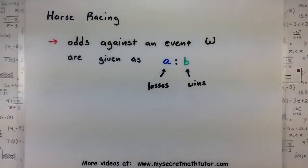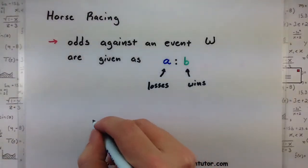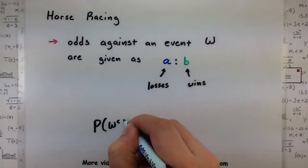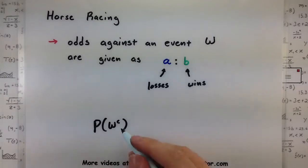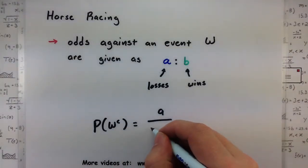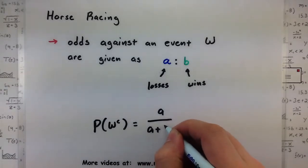And the neat part is when they give you odds like this, you can actually compute the probability of not winning. This is actually given by a nice little formula. So here's the probability for not winning equals A losses over A losses plus B wins.